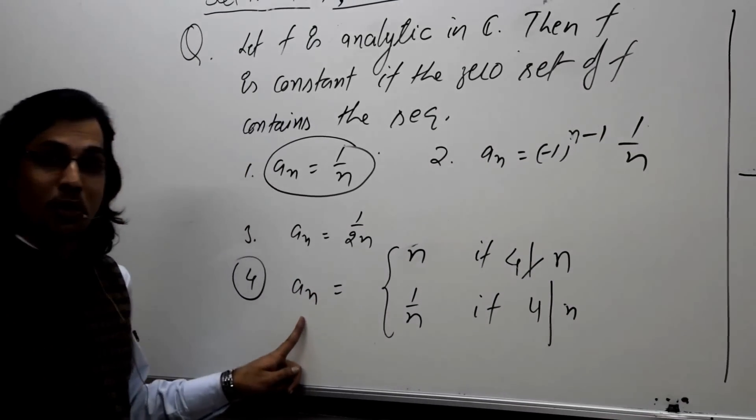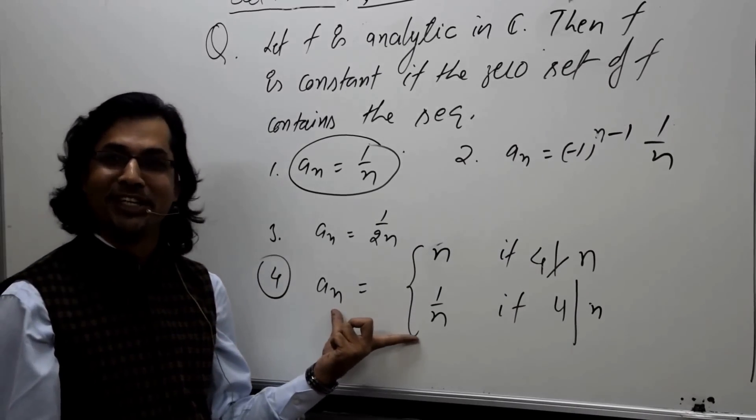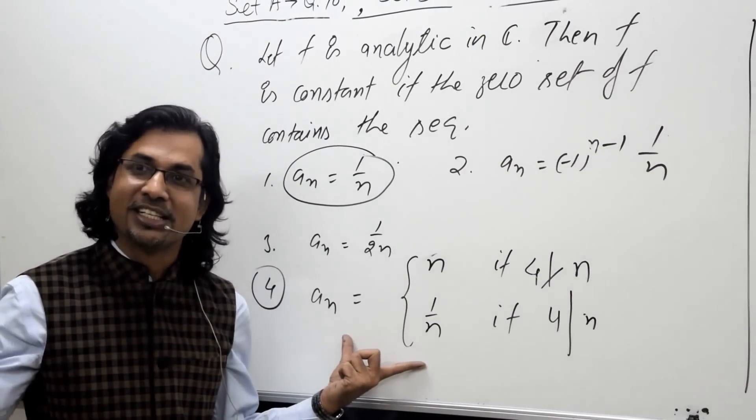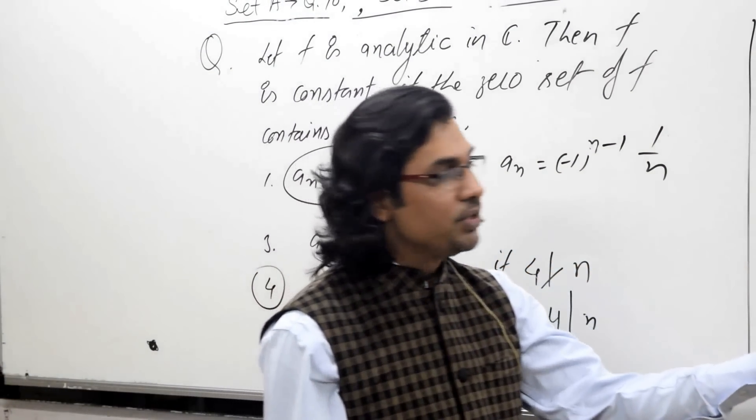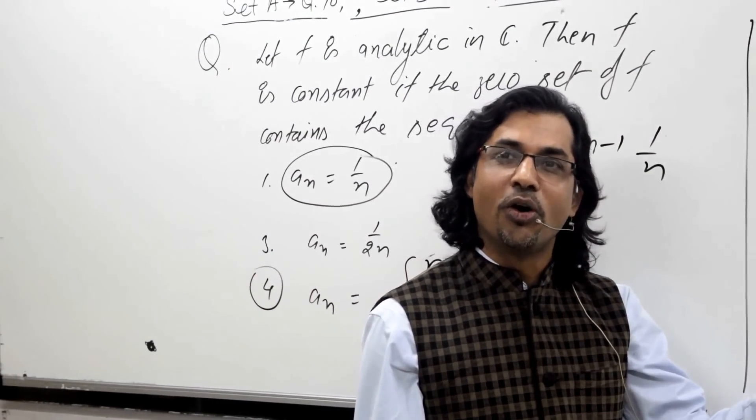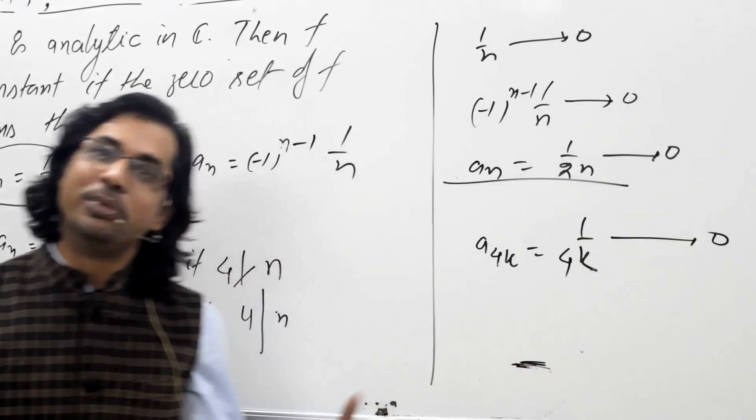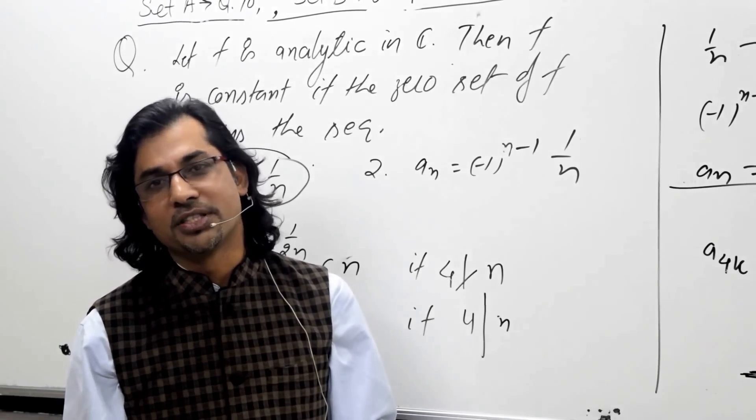So in this fourth option also, if F is 0 upon this sequence, it has a subsequence which is converging to 0. That means the function is 0 upon this sequence, hence it has to be identically 0 and hence constant.